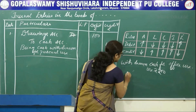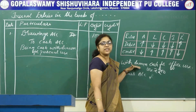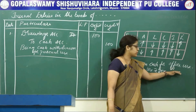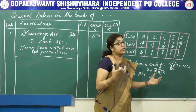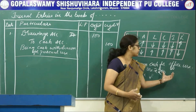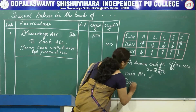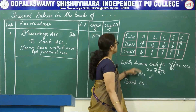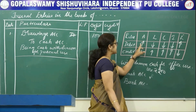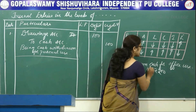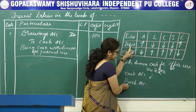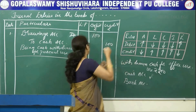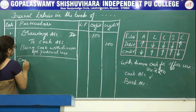First, identify the accounts here. One is cash account — it is not used for personal use, it is used for office use. You identify the cash account and the bank account. The second account is bank account. Cash comes under asset. Asset increases means it has to be debited. So, debit the cash account.